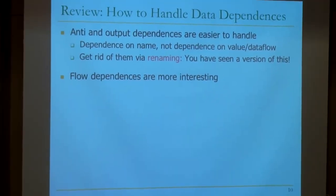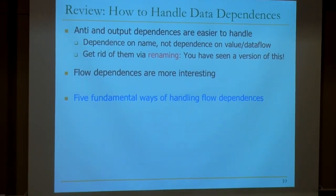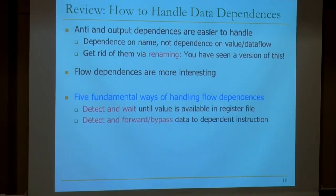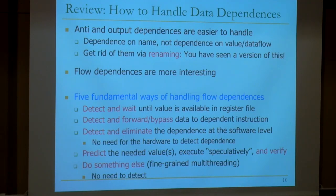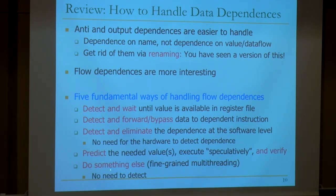Flow dependencies are more interesting, and we've seen five fundamental ways of handling them. We're going into fine-grained multithreading because it's actually more general. A lot of these approaches — like predicting the needed values — also apply to control dependencies. Control dependence, if you think about it, is a special form of flow dependence — it's a flow dependence on the program counter.